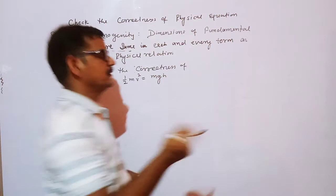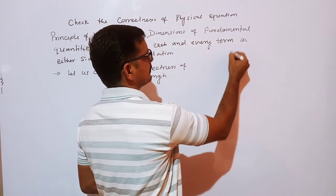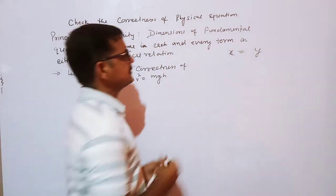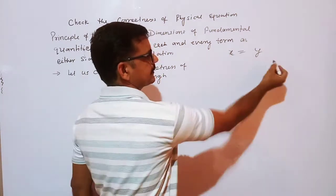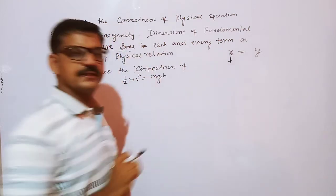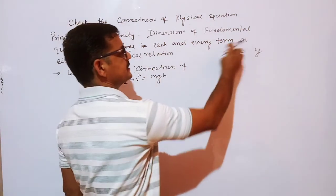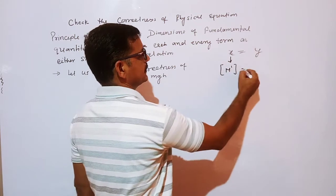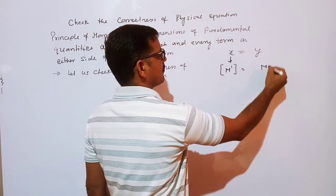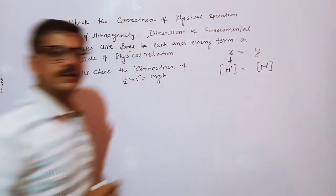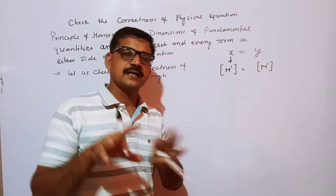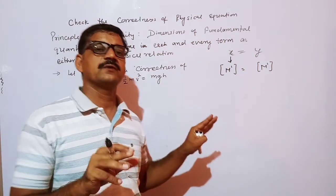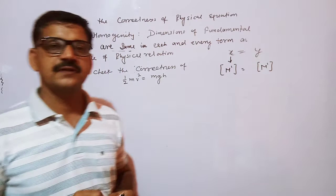To understand with an example: if you have a relation like x equal to y, then x is on the left hand side and y is on the right hand side. The principle of homogeneity says if the dimensions of mass on the left hand side is M power 1, then on the right hand side dimensions of mass should also be M power 1. This is similarly true for all seven fundamental quantities like mass, length, time, temperature, amount of substance, etc.